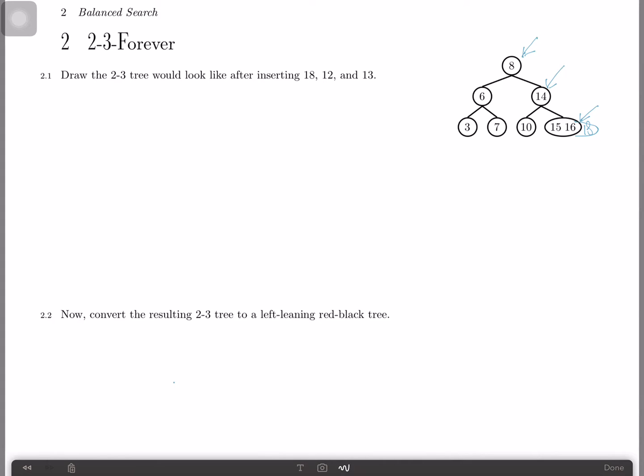So that means that we have to split this node up, and how we do that is we take the middle element, 16, and just shove it to its parent node. And then since its parent node will have 14 and 16, there's two items in that node, so that means there has to be three children. So 15 becomes its own child, and 18 becomes its own child, and the resulting tree looks something like this. So 8, 6, 14, 16, 3, 7, 10, 15, and 18. That is what our resulting tree looks like.